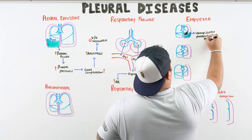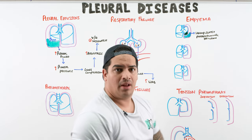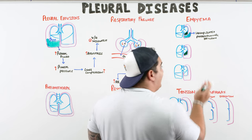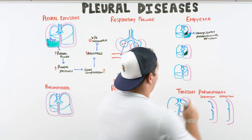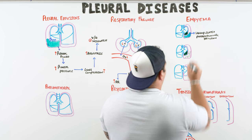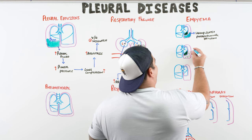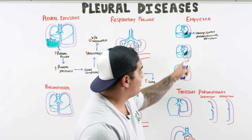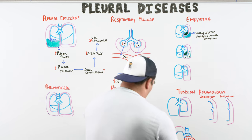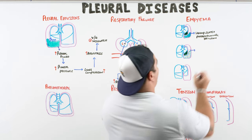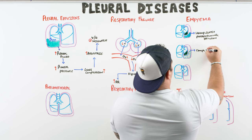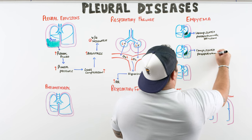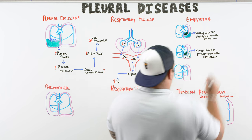As the infection continues and spreads, bacteria begin leaking out of the capillaries along with white blood cells. Now you have bacteria combined with the protein- and LDH-rich fluid, plus white blood cells. At this stage the effusion is called a complicated parapneumonic effusion. The pleural pH and glucose may also begin to drop.